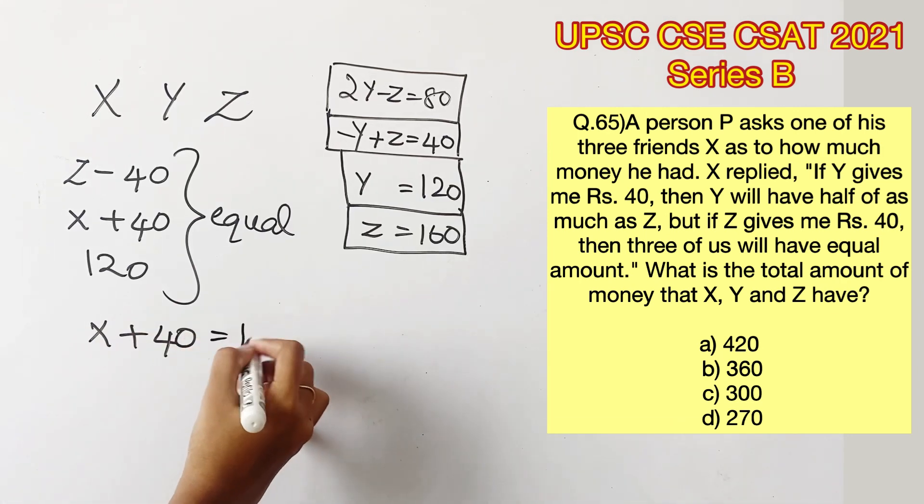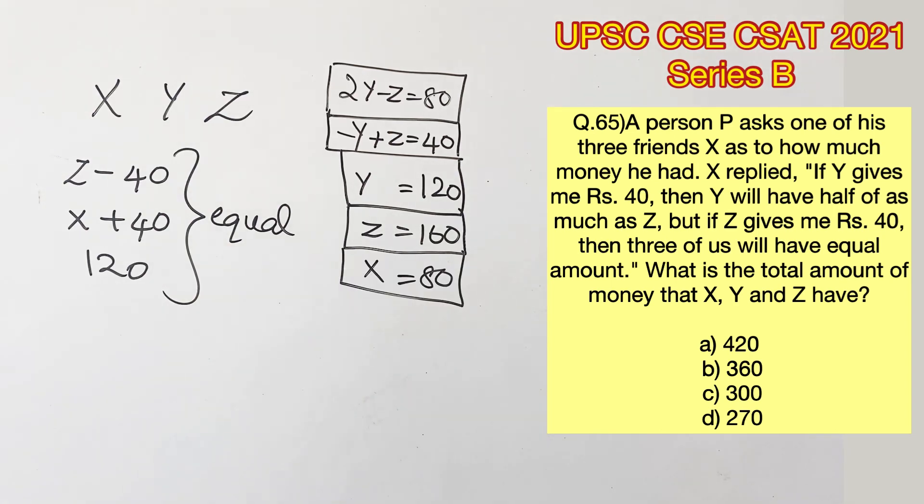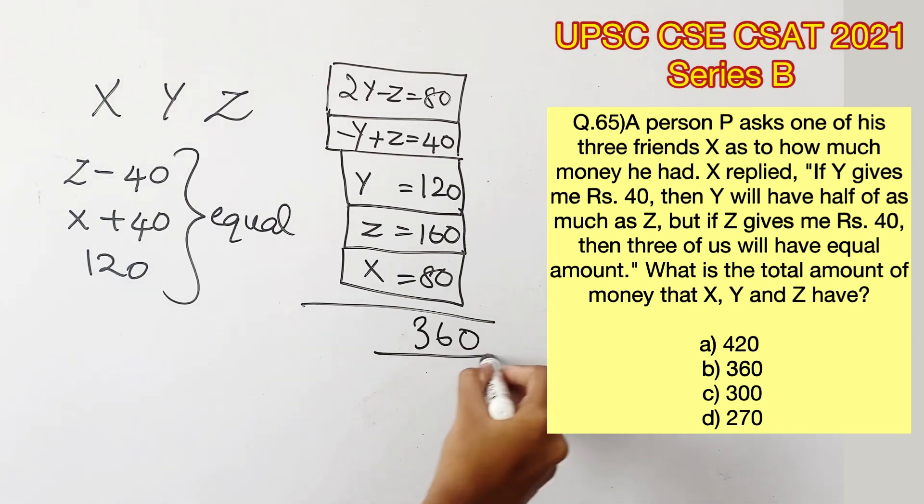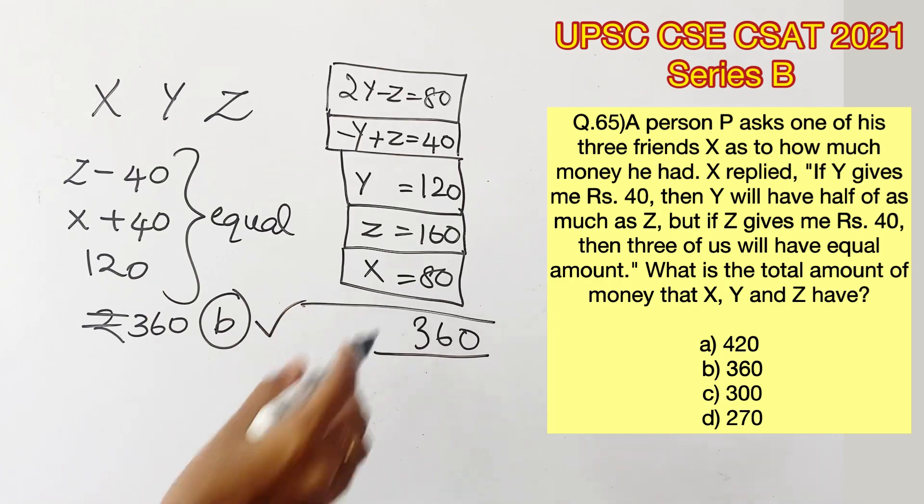Equating for X, we get 120 minus 40, that is 80. Now the total amount of X, Y and Z will be 120 plus 160 plus 80, that is 360. Therefore, option B is the right answer.